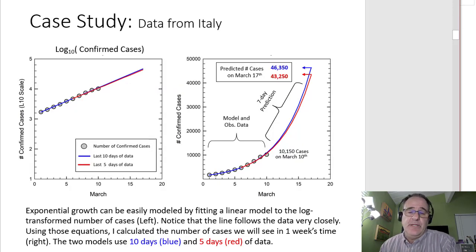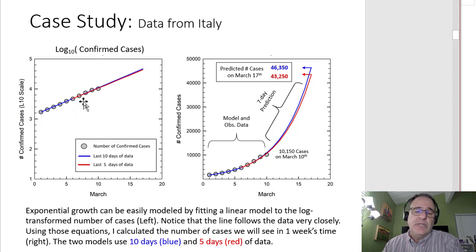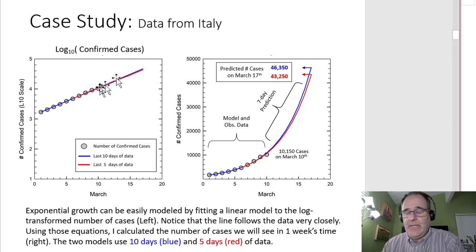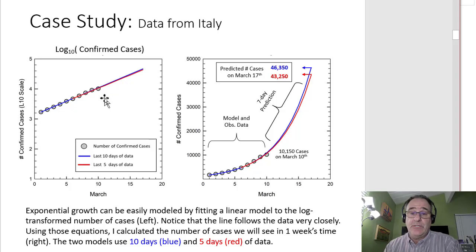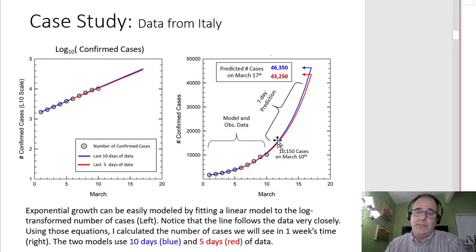This is from yesterday's video. I'm showing data from Italy plotted on a logarithmic scale — a log 10 scale — where the gray dots are the actual observed number of cases. The two models I fit are a regression line in blue for all 10 days in March at that point, and a second model on the last five days predicting the next seven. I use the shorter model because in some cases the rate of spread was changing, and a shorter model might more accurately capture the rate at that time.